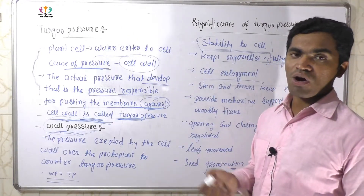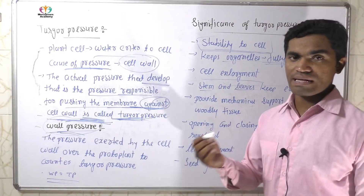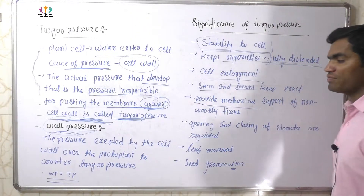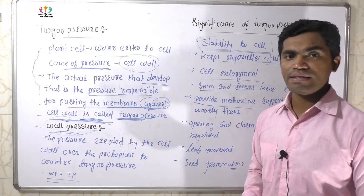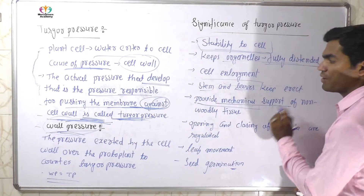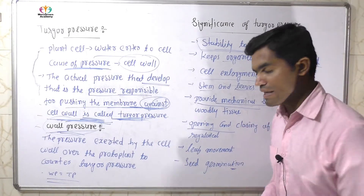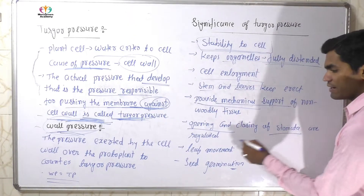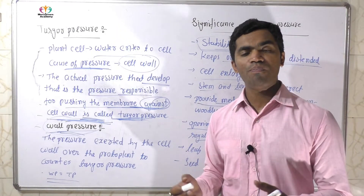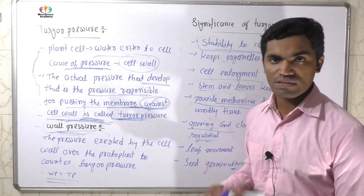Cell enlargement occurs because of the pressure. Stems and leaves always remain erect because of turgor pressure. It provides mechanical support to woody tissue like maize or sugarcane. Also, the opening and closing of stomata — the regulation of stomata — is due to turgor pressure. When pressure increases, stomata open, and when water is lower, stomata close.